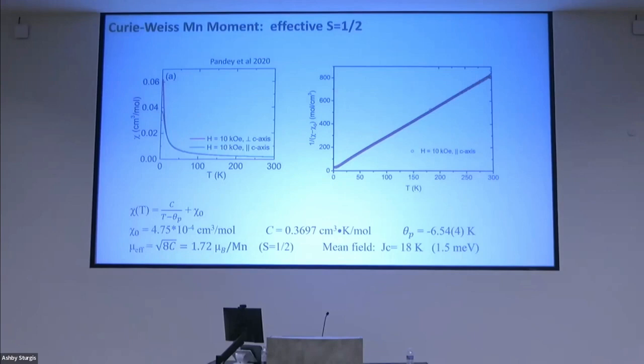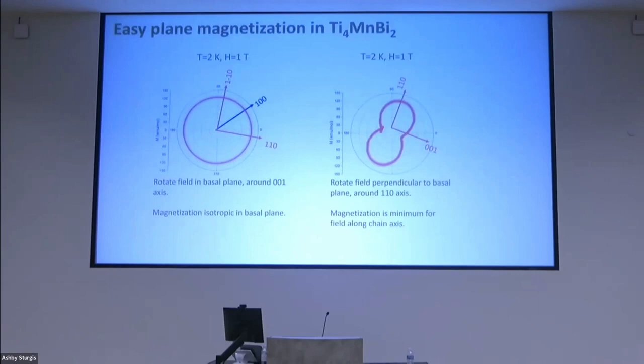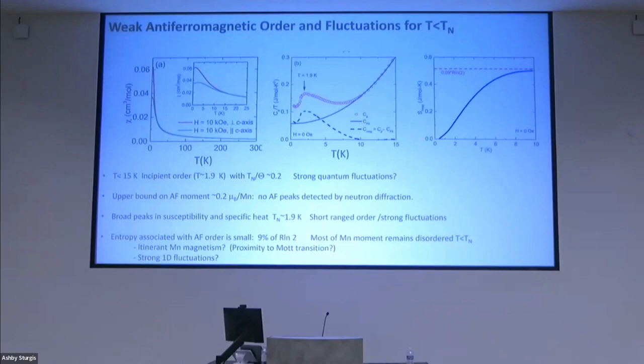The next step is to look at the magnetic moment. On the right is a plot of the susceptibility, the Curie-Weiss plot. At temperatures of something like 300 degrees or so, you get a Curie-Weiss moment of 1.7 Bohr magnetons per manganese, which is consistent with spin-1/2. The Weiss temperature is very low, about 6.5 degrees. It's negative, so we have an antiferromagnetic interaction, and the exchange is about 1.5 millielectron volts. If you measure the magnetization with fields in different directions, this suggests that you have some kind of easy-plane magnetization in the system.